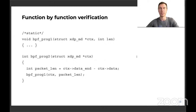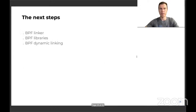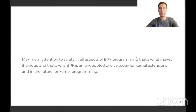Function-by-function verification is not available to static functions because LLVM does not adjust type information when it optimizes static functions. BTF type format is a foundation for BPF libraries, for dynamic linking, for building larger applications — all written in BPF C. An important point: the vanilla C linker does not check function arguments, it only matches names. The BPF linker (not ready yet) will do a type match. BPF libraries and BPF dynamic linking will be safer than C. Maximum attention to safety in all aspects of BPF programming — that's what makes it unique, and that's why BPF is an undoubted choice today for kernel extensions and in the future for kernel programming.